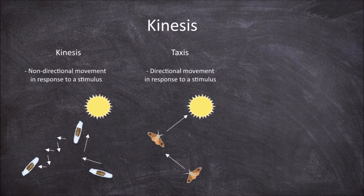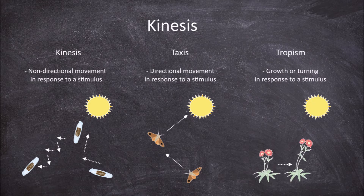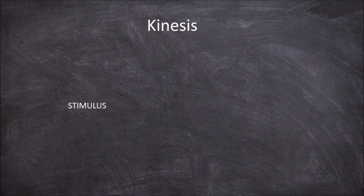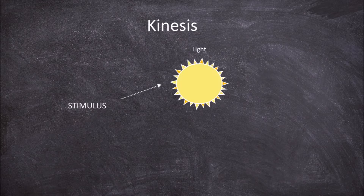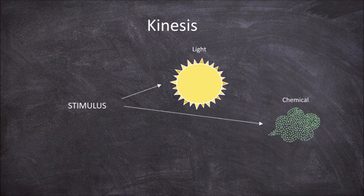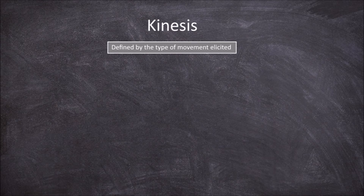It also differs from a tropism, which is a growth or turning of an organism in response to a stimulus. The stimulus that causes this non-directional movement can be many different things, such as light, chemical, or temperature. The types of kinesis are classified not on the stimulus type, but the type of movement elicited.